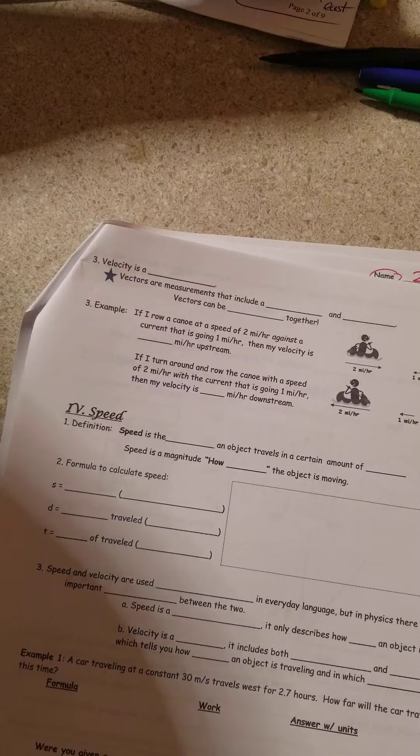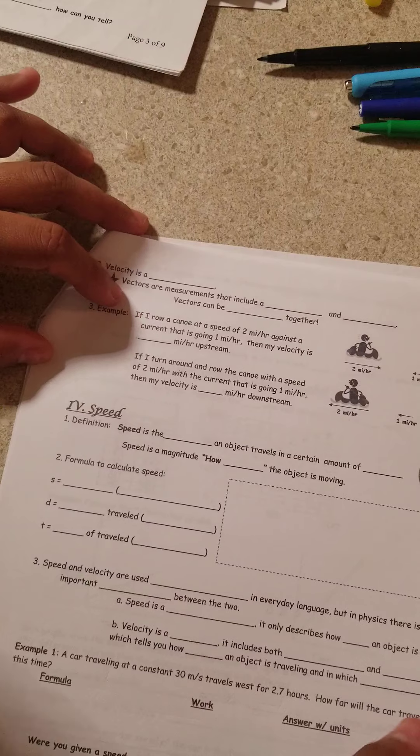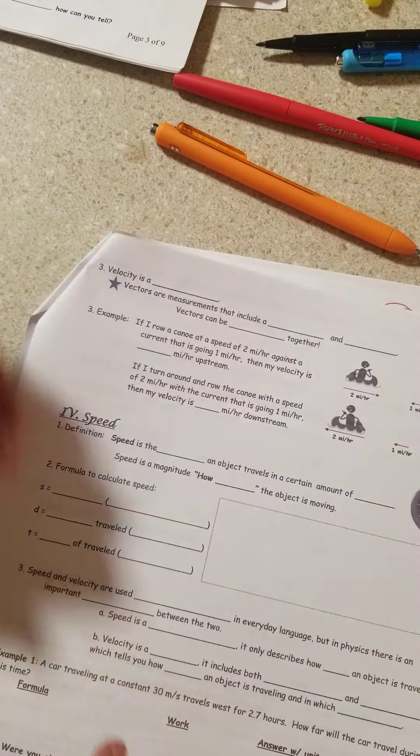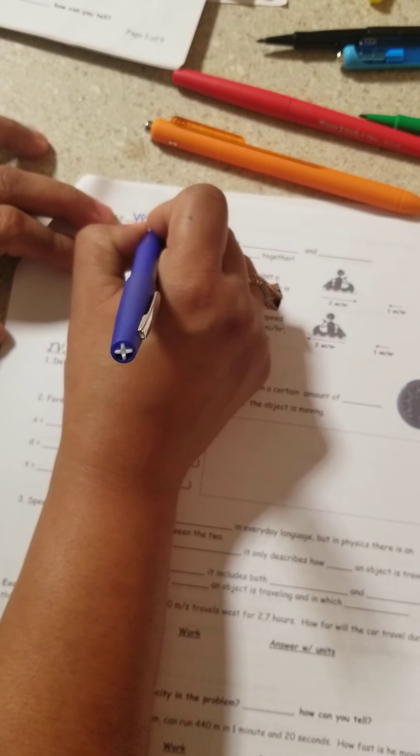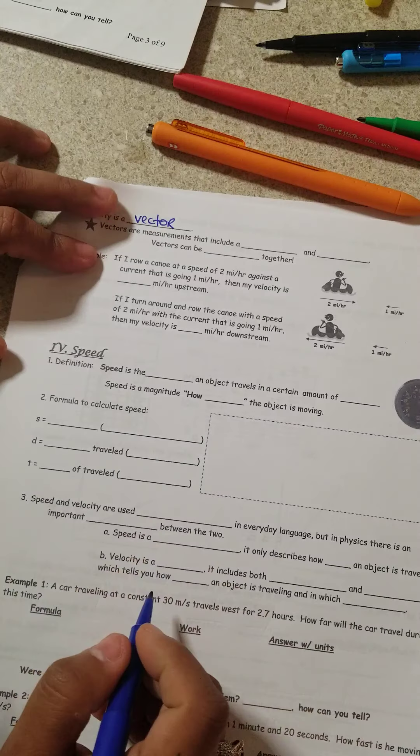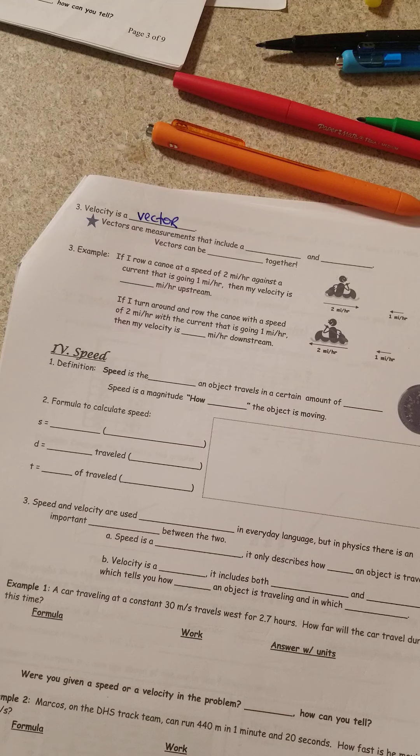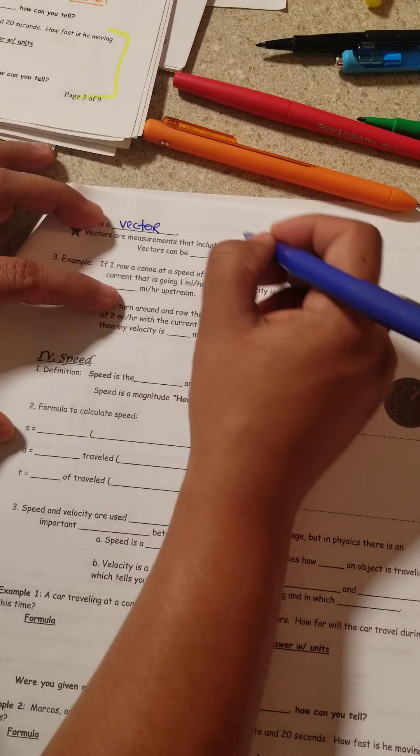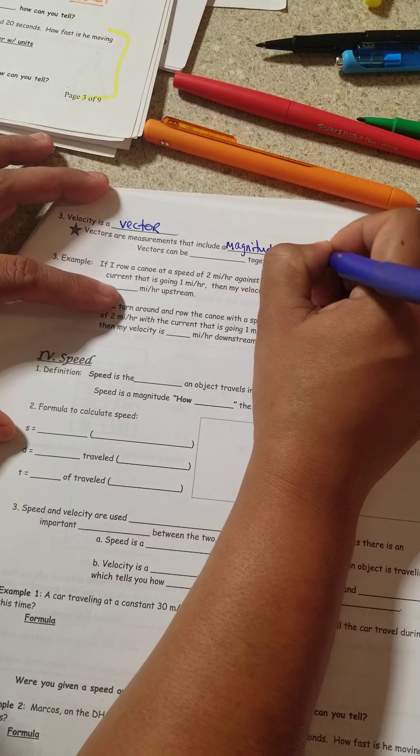Turn the page. Next page over here is velocity. Velocity it says. Let's move this out of the way. Velocity is a vector. And vectors are measurements that include, don't forget, magnitude. We're going to say that word a lot. And direction.